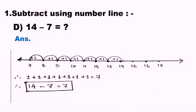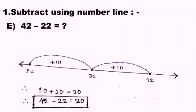Now question 1d: subtract 7 from 14. I have followed the same procedure — chosen the subtrahend first, taken a similar gap between numbers, and moved to the number 14. You can ignore the extra numbers 15, 16, 17. Count the jumps only. From 7 to 14, I have to jump 7 steps. So 14 minus 7 equals 7.